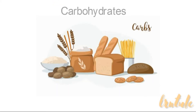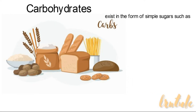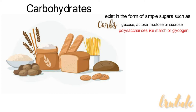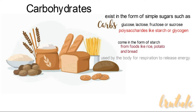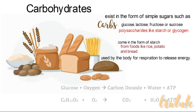Carbohydrates exist in the form of simple sugars such as glucose, lactose, fructose, or sucrose. They can also exist as polysaccharides such as starch or glycogen. Most carbohydrates come in the form of starch from food sources like rice, potato, and bread. Carbohydrates are used by the body for respiration to release energy. From the respiration equation we can see that glucose plus oxygen gives carbon dioxide plus water plus energy.